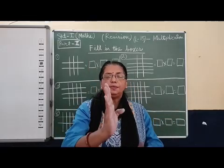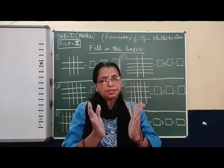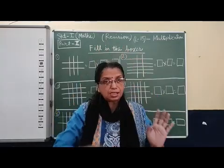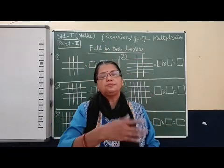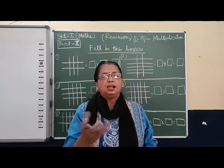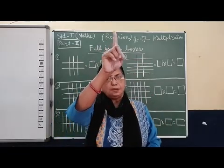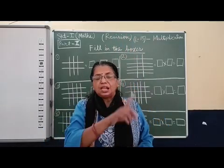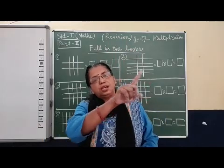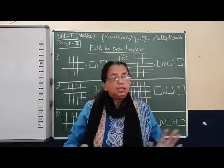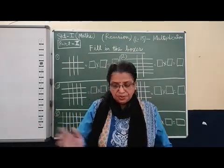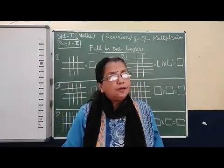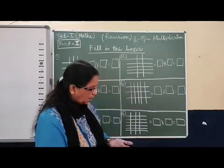That means if you tell me the table of three, how many standing lines will there be? Three standing lines. Suppose I am telling you three twos — that means table of three, so three standing lines will be there. And twos means times — two times. So the sleeping line will be two. This you have learnt previously. Same concept we will apply here and we will find out the answer.